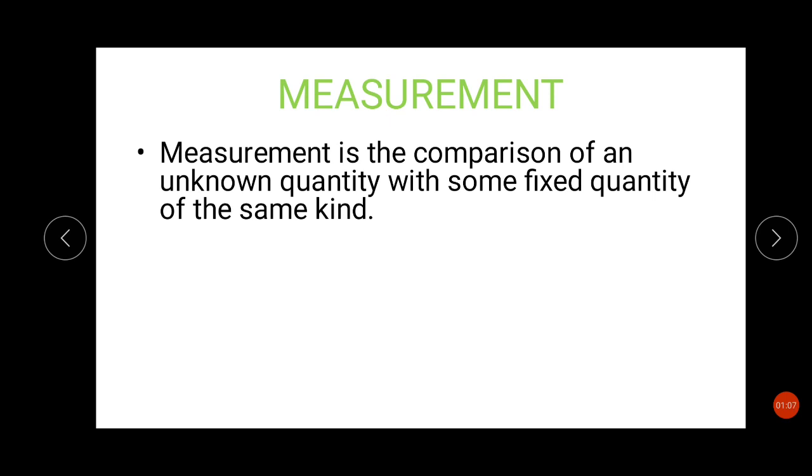He will take up the amount of sugar and compare it with that 1 kg. If he has two blocks of 1 kg, he will put them in one of the pans, and when the balance is achieved between the 2 kg of blocks and the amount of sugar, then he will pack it and give it to you. That's how we generally do. So measurement is the comparison of an unknown quantity with some fixed quantity.